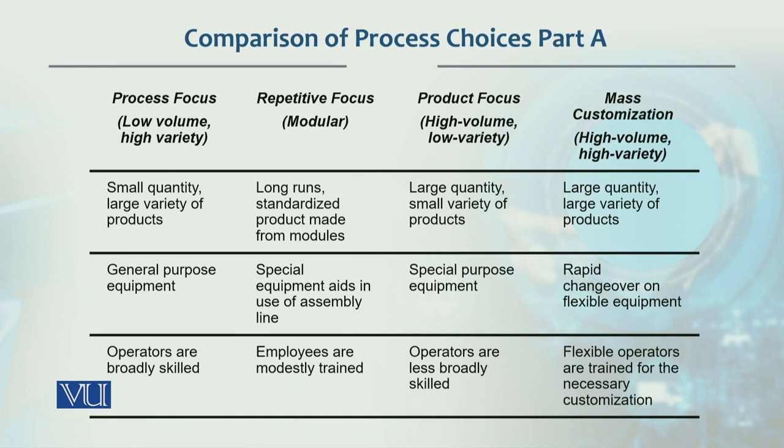In product focus, there is large quantity but the variety is very small. Usually the variety will be in attributes like size, shape, etc. In mass customization, there is large quantity as well as large variety — both are produced.